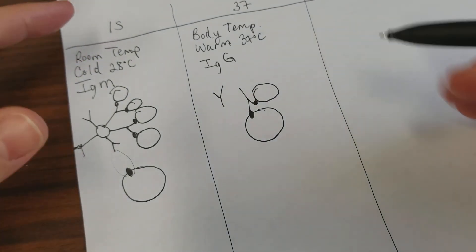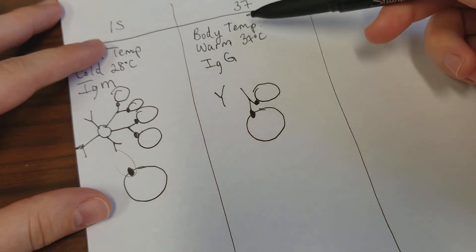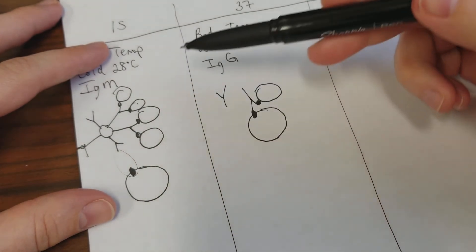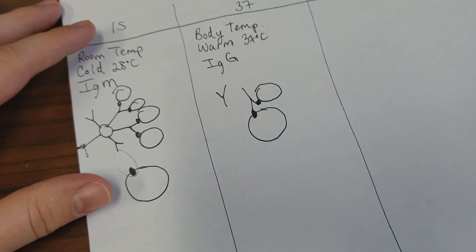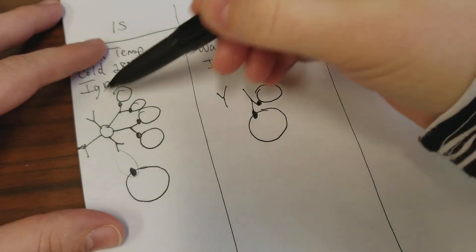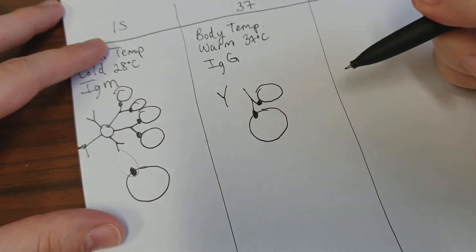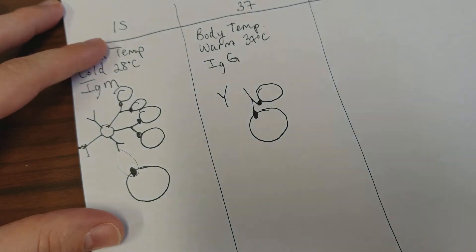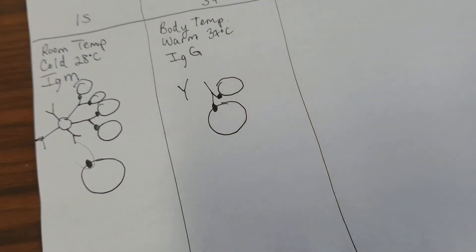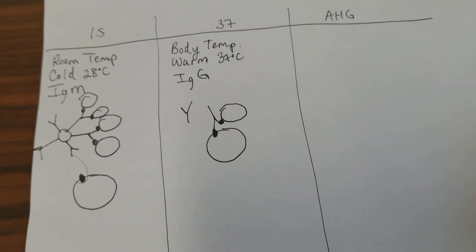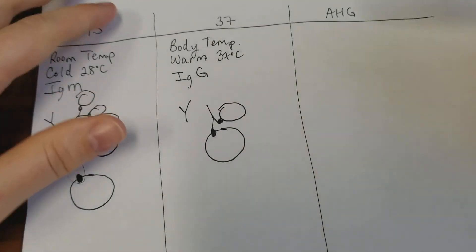So then what happens? Between each of these steps, we do have centrifugation and we look for agglutination, but when we are about to go into the AHG phase, we're doing something a little different.